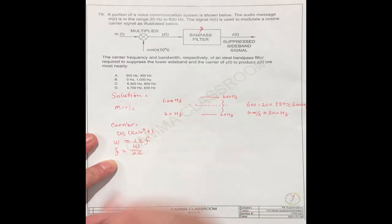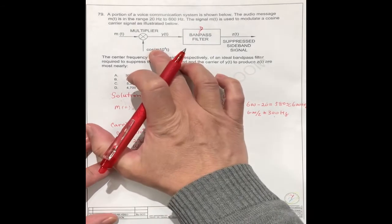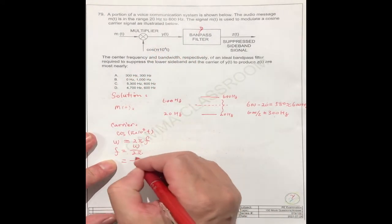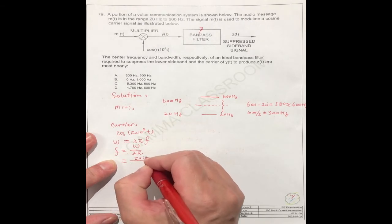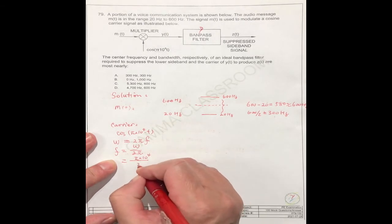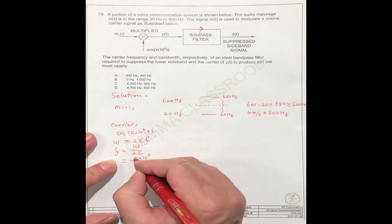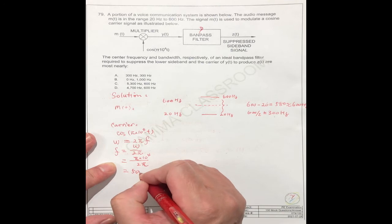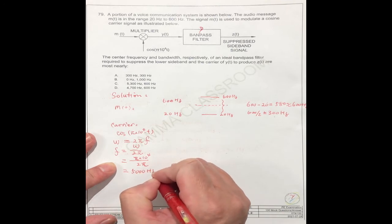Omega is pi times 10 to the power 4, so it equals pi times 10 to the power 4 divided by 2 pi. The pi cancels, divide by 2, it should be 5000 hertz.